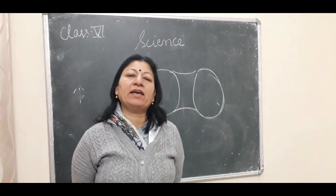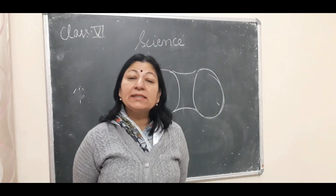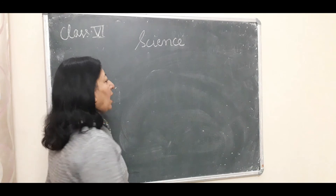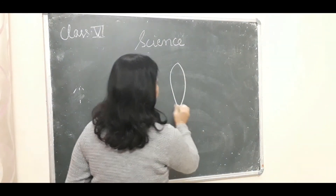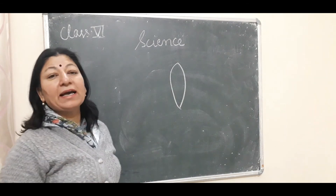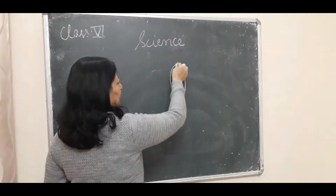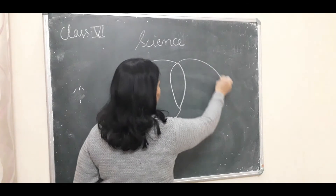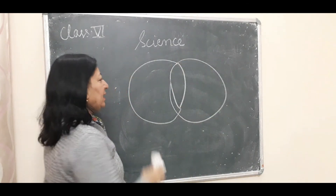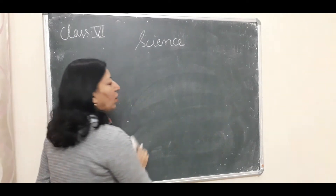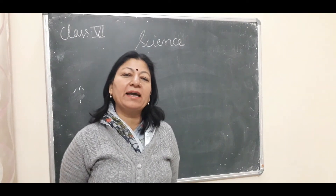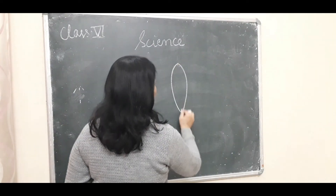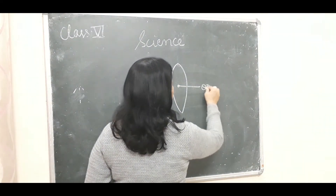So lenses are of two types: concave and convex. Unlike a mirror which has one focus and one center of curvature, a lens has two foci (F1 and F2) and two centers of curvature (2F1 and 2F2). The center point of the lens is called the optical center.